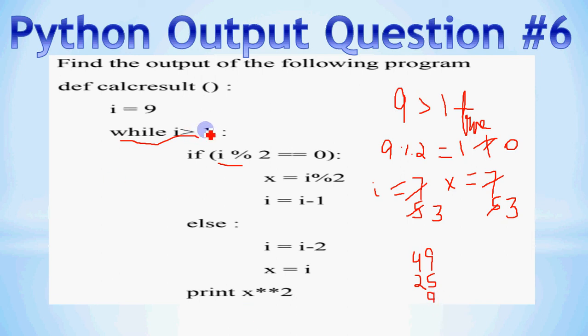Pher upar ja ke check ho ga, 3 greater than 1, true hai. 3 mod 2 bhi 0 nahi ho ta, aur phir se hum ne usko i ko i minus 2 kiya, toh 1 a gaya. So yahan pe bhi 1 a gaya, aur 1 ka square, 1 hi ho ta hai, toh 1 print ho jayega. Aur ab woh jab upar ja ke check karega, 1 greater than 1, so condition false hai, kyunki 1, 1 se bada nahi ho ta, woh equal hai, bada nahi hai. So condition is false, loop will stop then and there.